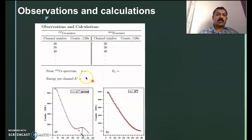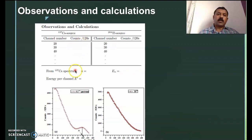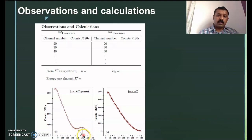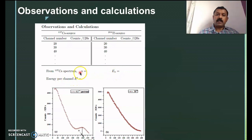These are the observations and calculations. For the cesium source, set the beta-ray spectrometer to count for 120 seconds and record the count rates for each channel number. Plot count rate as a function of channel number; for cesium you get a spectrum with a prominent peak. You must identify this peak channel number N and the corresponding energy E_N. From this, calculate energy per channel E′ = E_N / N.